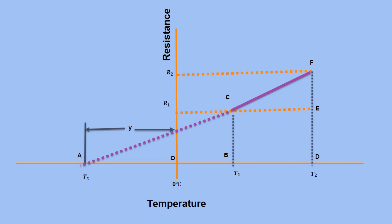Now we will derive the expression to find the changed resistance. Consider that resistance of the material has changed from R1 to R2 while temperature was increased from t1 to t2. The line segment CF shows how the resistance varies for temperatures between t1 and t2. The steeper the slope of segment CF, the more the resistance increases with temperature.